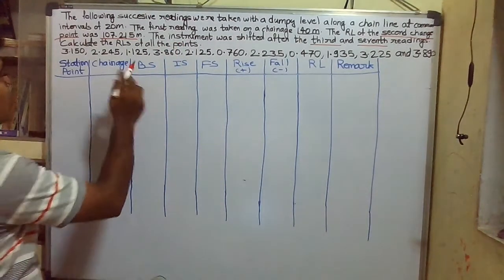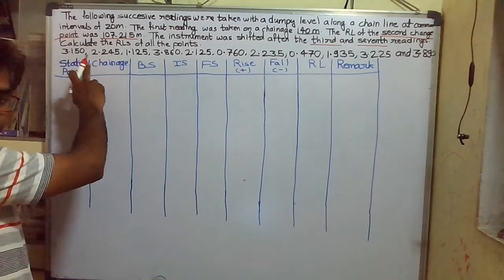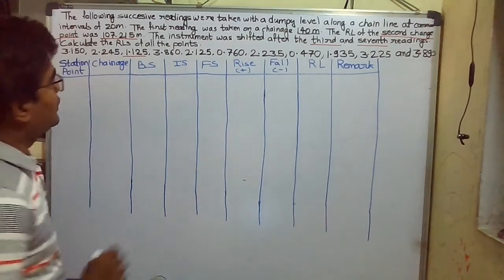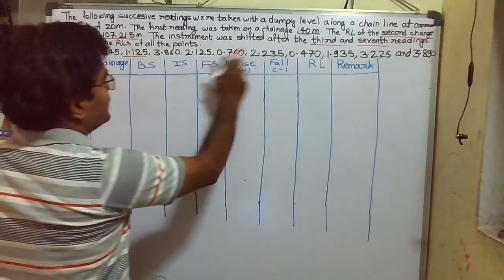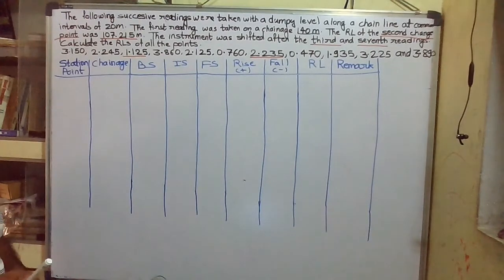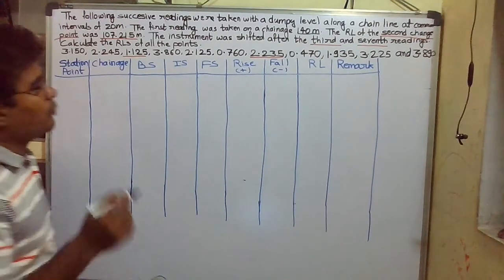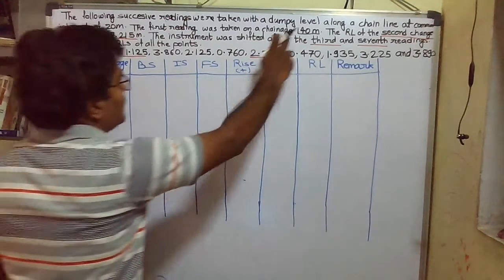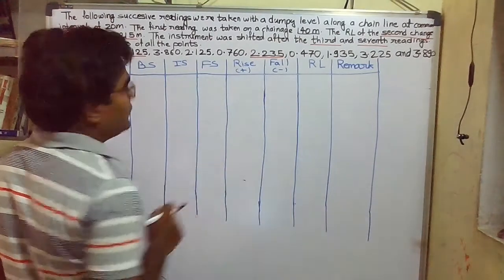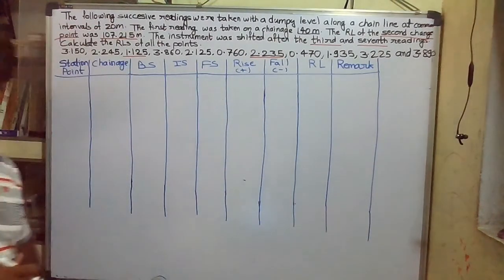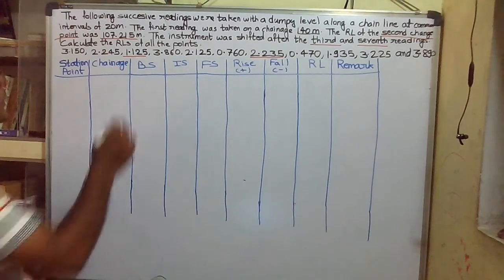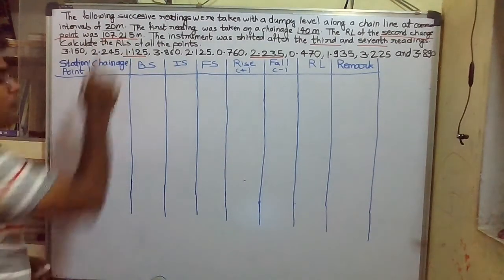The readings are given. We will first mark after which reading the instrument is shifted — that is after the third and after the seventh. One additional thing given is that the first reading is taken at a chainage of 140 meters, and readings are taken at a common interval of 20 meters.